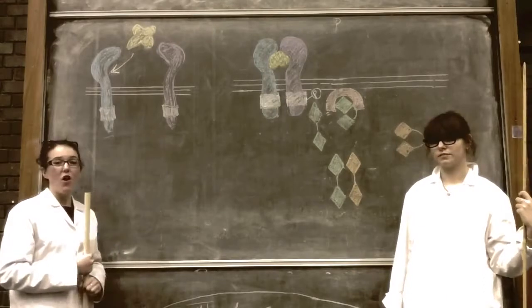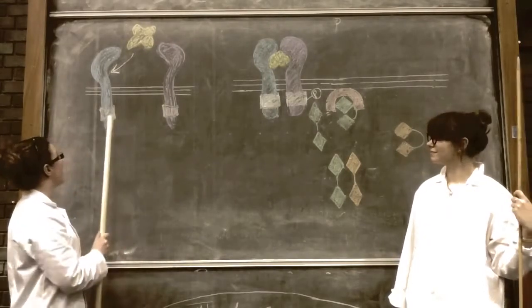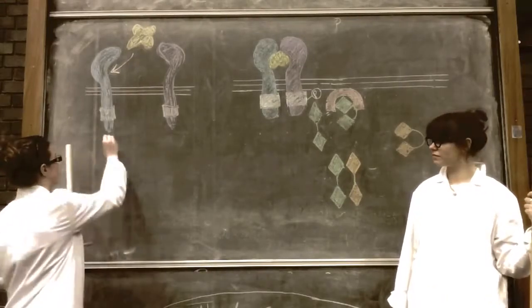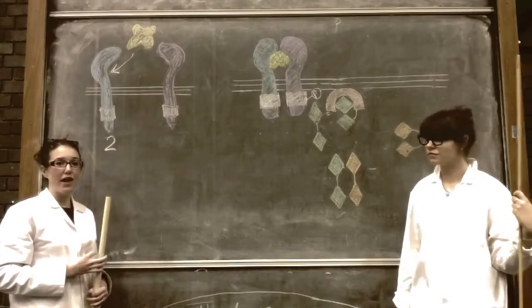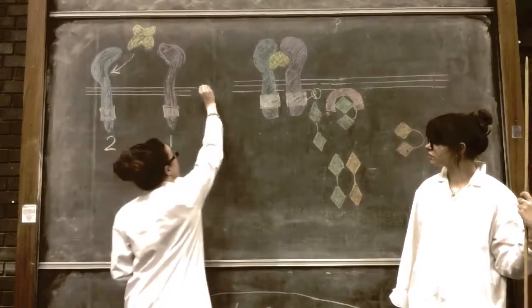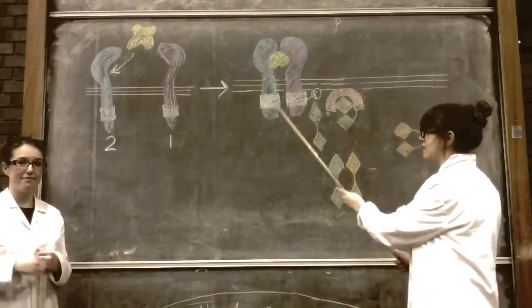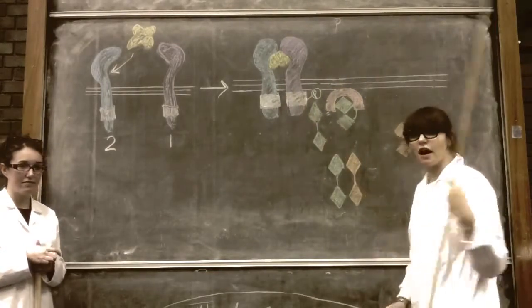These bind to TGF beta receptors, which are serine/threonine kinases. The ligand binds to the type 2 receptor. The activated type 2 receptor forms a homodimer to dimerize with type 1. Type 2 phosphorylates type 1 at the juxta-membrane domain.